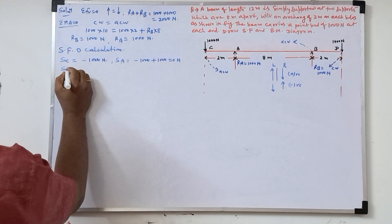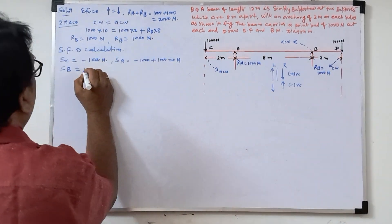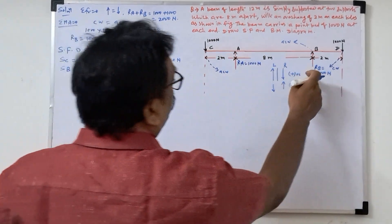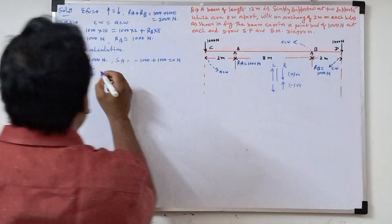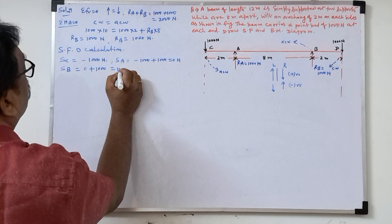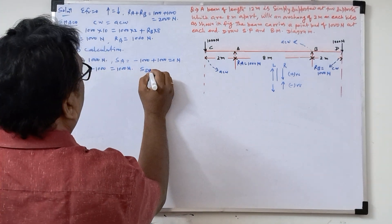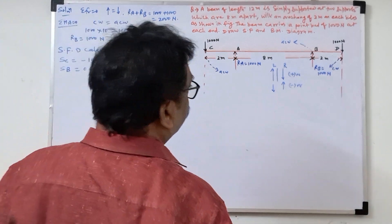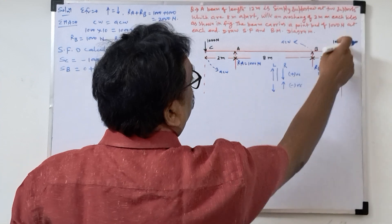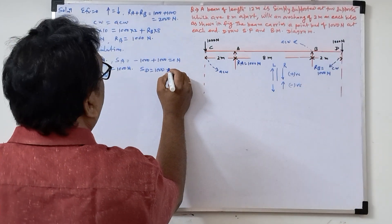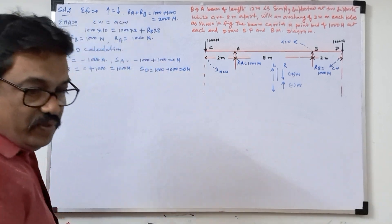Now shear force at B: zero plus, up to B on the left side, upward force thousand, plus thousand, so it is coming thousand Newton at B. Then at D, shear force at D: first we will write thousand, then downward force thousand negative, so minus thousand, it is coming zero Newton. So we got the shear force values.